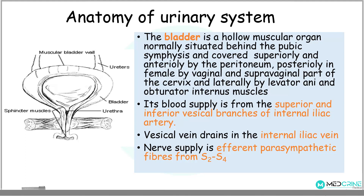The urinary bladder receives its blood supply from the superior and inferior vesical branches of the internal iliac artery, and the vesical veins drain into the internal iliac vein. The nerve supply to the urinary bladder is from the afferent parasympathetic fibers of S2 to S4.